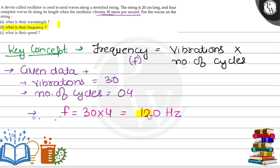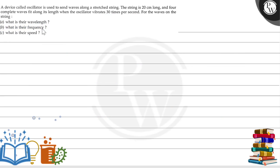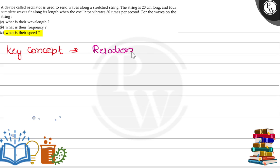That gives us 120 hertz — that is our frequency and the answer to part B. Now for part C, we need to find the speed. We have wavelength and we have frequency, so the concept here is the relation between speed v, frequency f, and wavelength lambda.